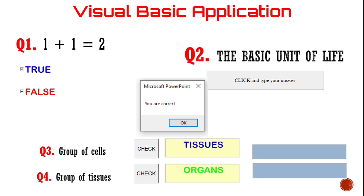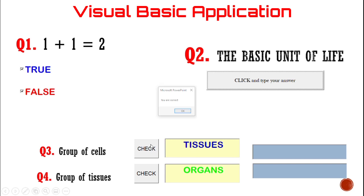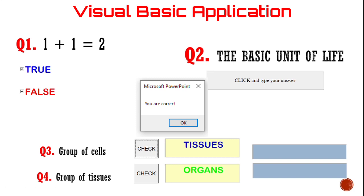That is also a sample of coding. In question number three, group of cells, and then our answer is tissue. So this is what we call the text box. Using the command button, we are able to check if our answer in the text box is correct or not. Let's check. Just click it and then you are correct, meaning to say this command box will check your answer in the text box, whatever you input there.